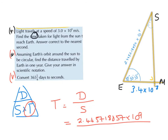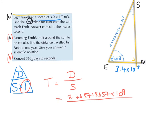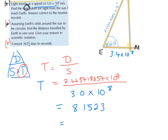Dividing by the speed 3.0 × 10^8 and putting that into the calculator gives 8.1523... seconds, so approximately 8.15 seconds — or we could write 8 seconds — for light from the sun to reach the earth.